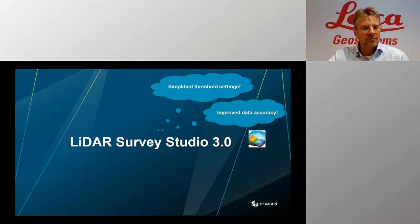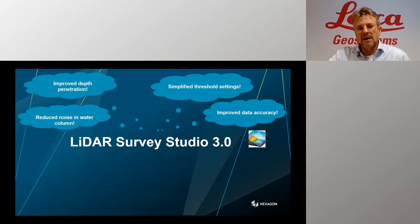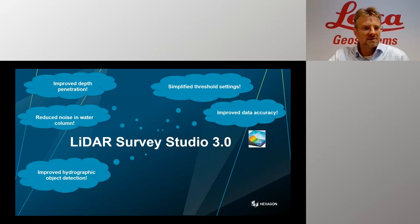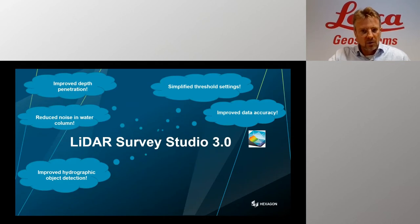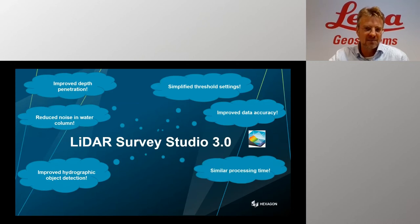We wanted to improve data accuracy — not because it was bad before, but because we had ideas on what we could do to improve it. We also saw options to improve depth penetration and increase the sensitivity of the sensor, which leads to reduced noise in the water column and improved object detection of small objects on and in the seabed or water volume. However, adding these algorithms also increased computational power needed. Time is money, so we wanted to keep similar processing times as a key requirement for LiDAR Survey Studio 3.0.